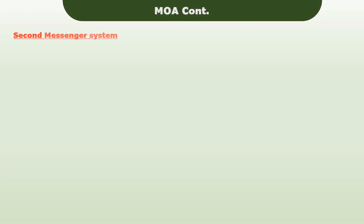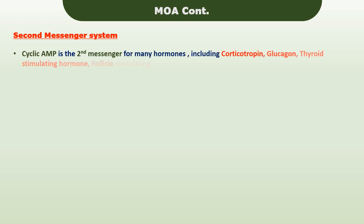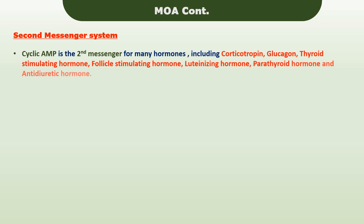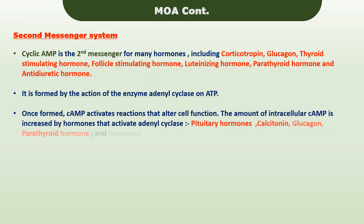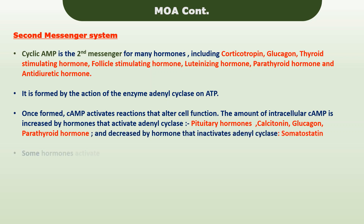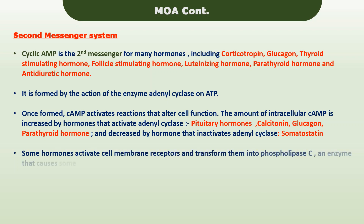Cyclic AMP is the secondary messenger for many hormones including corticotropin, glucagon, TSH, FSH, and LH. Cyclic AMP is formed as a result of the action of the enzyme adenylyl cyclase on ATP. Once formed, cyclic AMP activates reactions that alter cell function. Some hormones activate cell membrane receptors and transform them into phospholipase, an enzyme that causes some of the phospholipids in the cell membrane to split into smaller molecules.